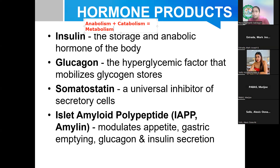Amylin — also called islet amyloid polypeptide — is a polypeptide. Its role is in appetite regulation and gastric emptying. Gastric emptying takes approximately 2 hours, and amylin plays a role in that process, as well as in glucagon and insulin secretion. Gastrin, produced by G-cells, is a powerful stimulator of gastric acid secretion. Pancreatic polypeptide helps in the digestion process, though its exact mechanism of action is still not fully known.